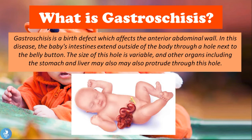These organs are in contact with the amniotic fluid during the gestational period, and once the baby is born they are exposed to the air. Gastroschisis is a birth defect of the anterior abdominal wall in which abdominal organs protrude through a hole found on the right side of the umbilicus, exposed to amniotic fluid during gestation and to air after birth.